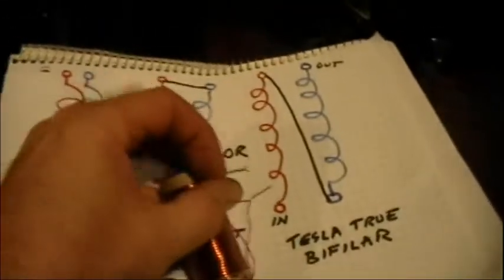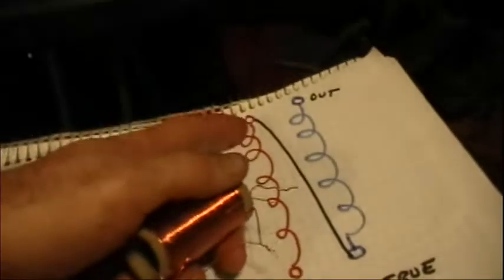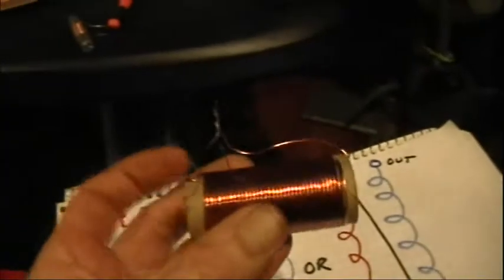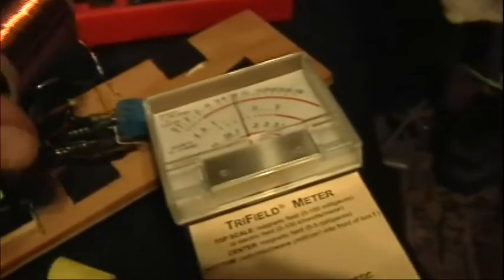Now for the true Tesla bifiler, we have to rearrange the connections again. For the true Tesla bifiler, I've taken the top of one coil and connected it to the bottom of the other coil, here, as you can see. So now we take the two free ends over to our inductance meter, and we stick them in the holes there like that.